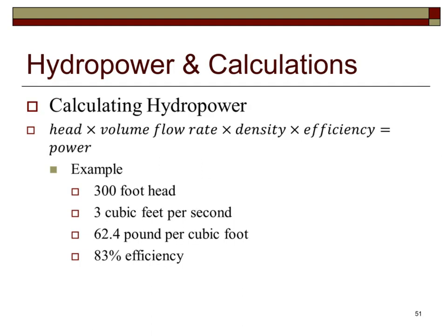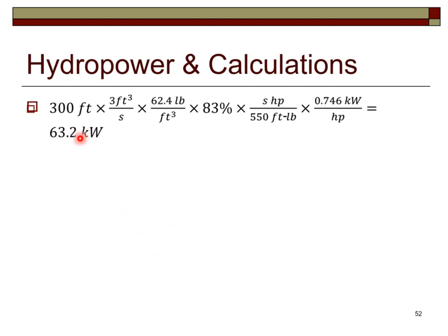In this example, we calculate the power from a 300-foot head. Water weighs 62.4 pounds per cubic foot, efficiency is 83%, and flow is 3 cubic feet per second. We multiply 300 ft × 3 ft³/s × 62.4 lb/ft³ × 0.83, then divide by 550 ft·lb/s per horsepower, and multiply by 0.746 kW per horsepower, arriving at 63.2 kilowatts.